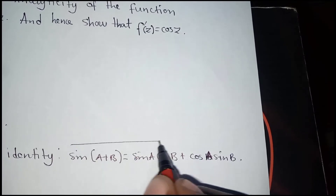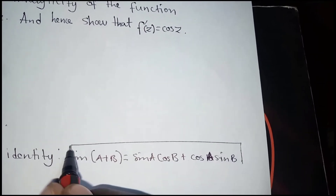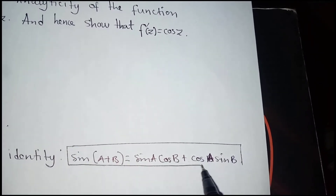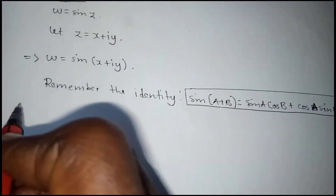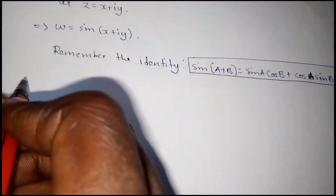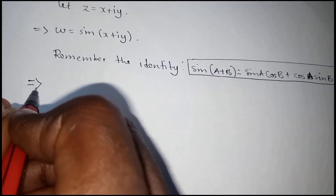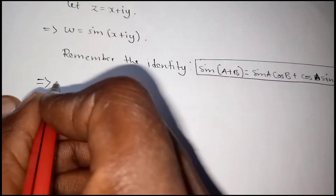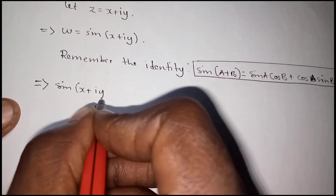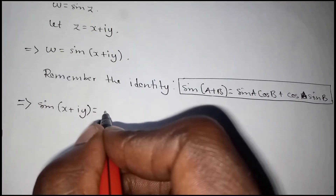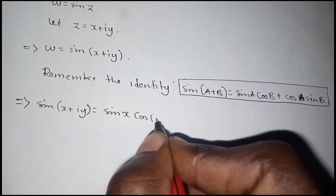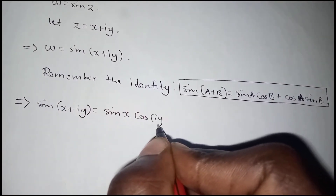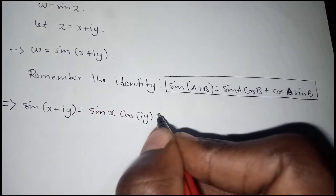Here, a and b will be x and iy respectively — where there's x we use a, and where there's y we use b. This implies that our original function, when we substitute for a and b from the identity, gives us what has been written.